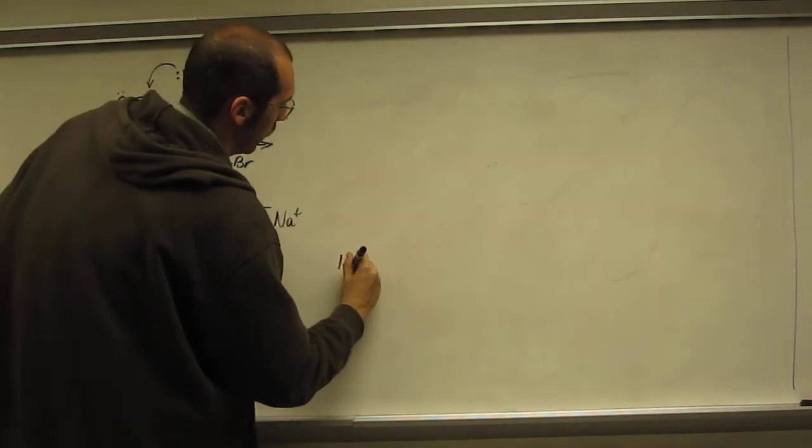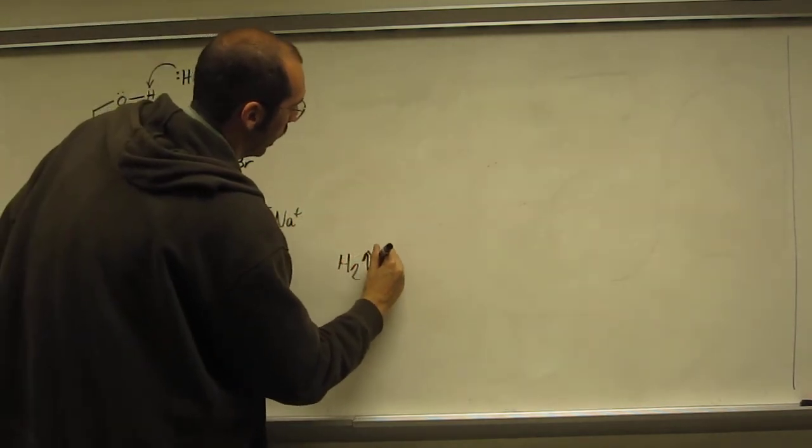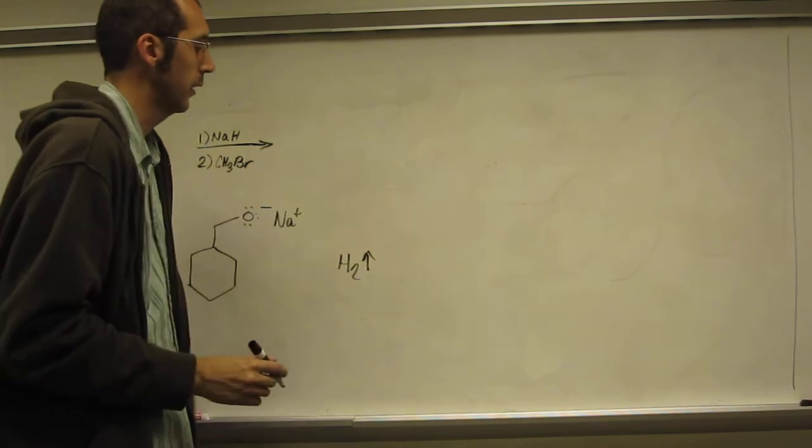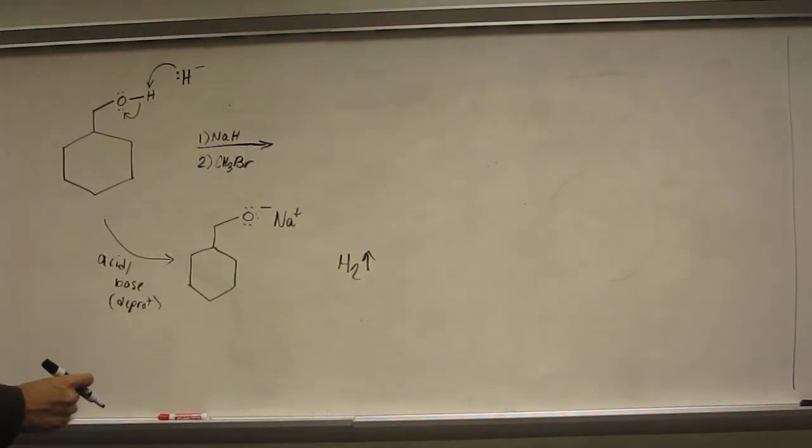The alkoxide and H2 gas. Commonly you'll see a little arrow there in organic chemistry instead of that little G symbol that you might be used to from Gen Chem.